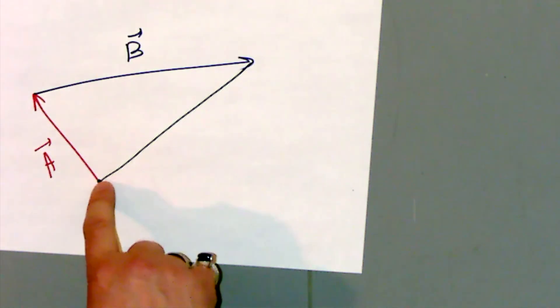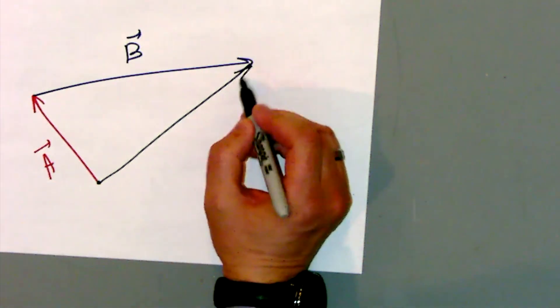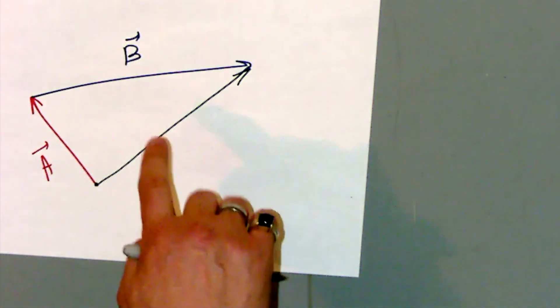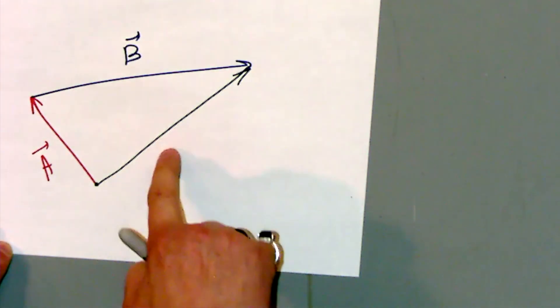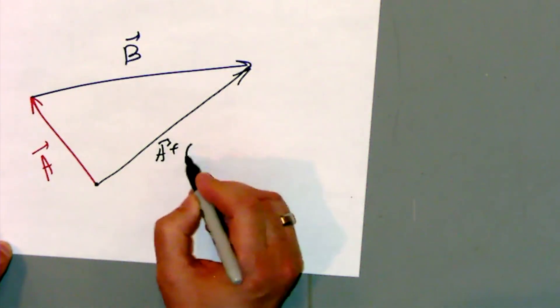So in that case, it starts walking here, it ends walking there. We have to draw an arrow from start to finish. So if I ask you or anybody else, find the sum of A and B, you say, this black arrow is the sum of A and B.